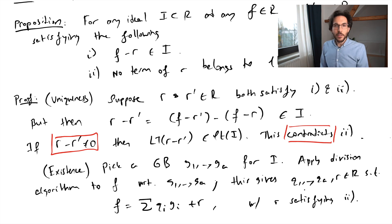R clearly satisfies i, because F minus R is simply sum of q_i g_i's, which is in the ideal. So the condition i is satisfied. And we end the proof here. We've shown existence and uniqueness.